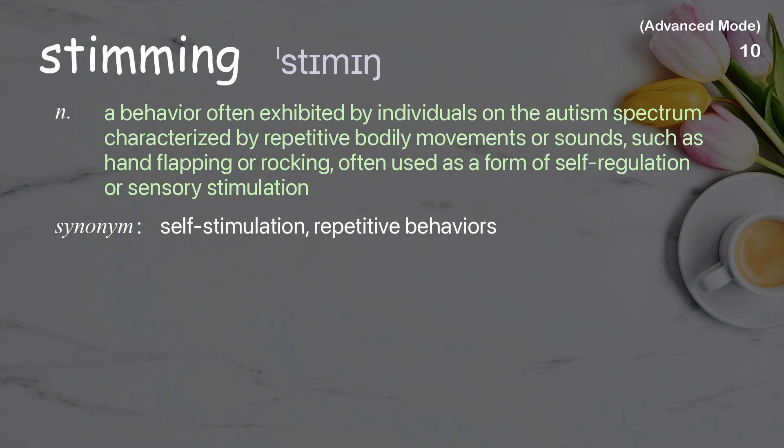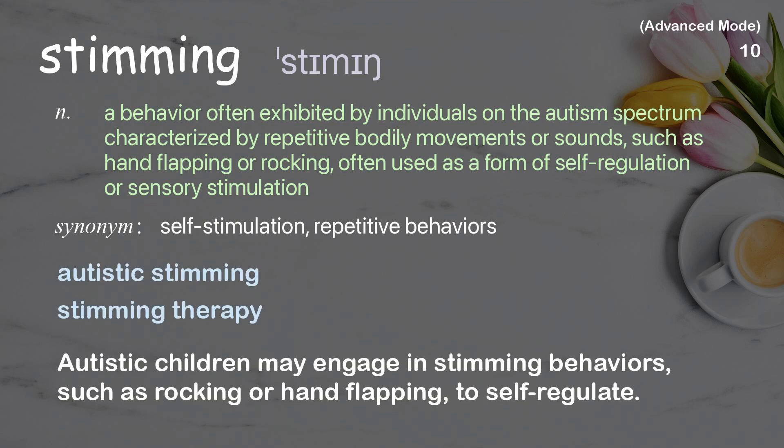Stimming. A behavior often exhibited by individuals on the autism spectrum, characterized by repetitive bodily movements or sounds, such as hand flapping or rocking, often used as a form of self-regulation or sensory stimulation. Examples: Autistic stimming. Autistic children may engage in stimming behaviors, such as rocking or hand flapping, to self-regulate.